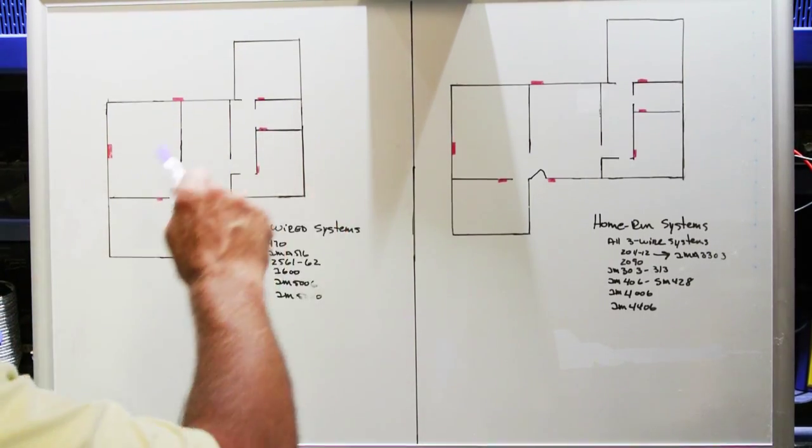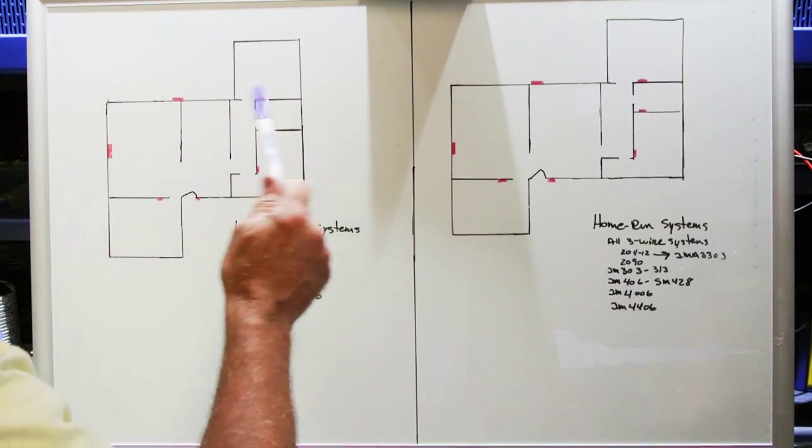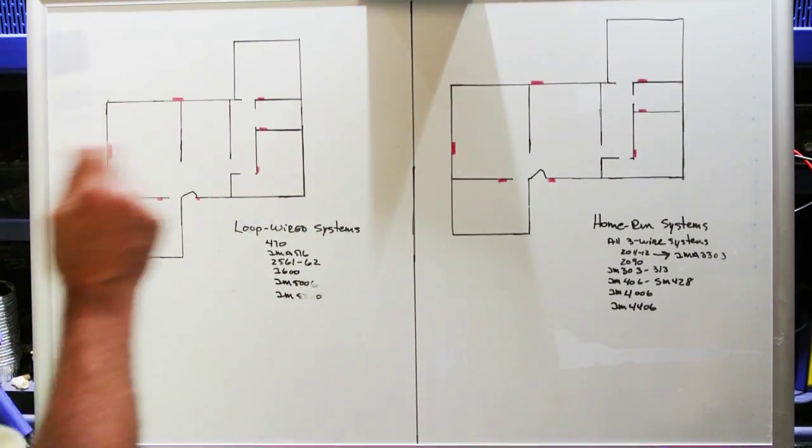These are nice 1800 square foot, two bedroom, one bath home systems with an optional bin.